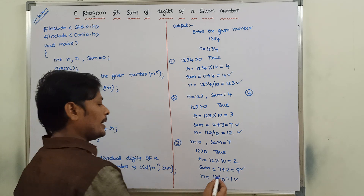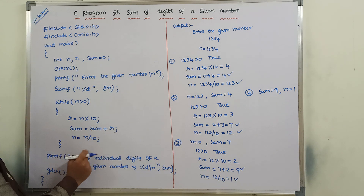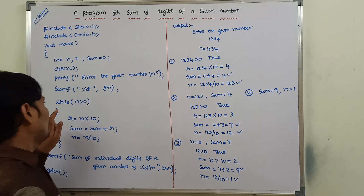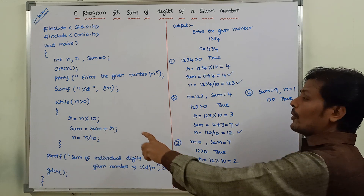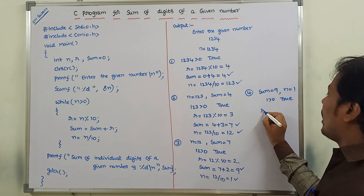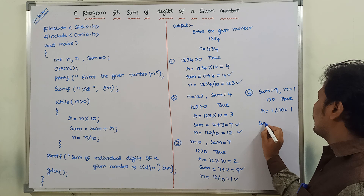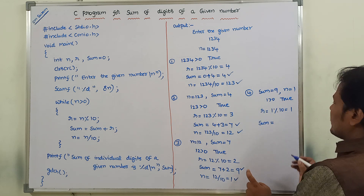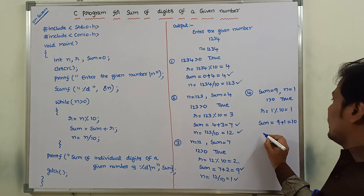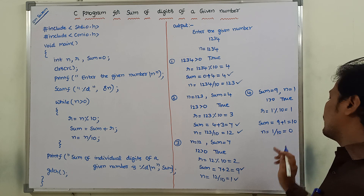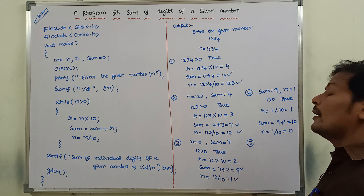Fourth iteration: sum is equal to 9 and n is equal to 1. Control goes to the while loop; 1 greater than 0 — condition true. r is equal to 1 modulus 10 — that is equal to 1. Sum is equal to sum plus r: 9 plus 1 equals 10. n is equal to 1 divided by 10 — actually 0.1, but we take the integer value, that is 0. After completing the fourth iteration, control goes for the fifth iteration.